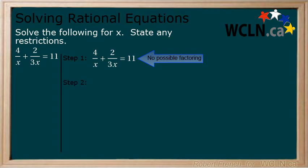Step 2. Find the lowest common denominator. We have x and 3x, so our lowest common denominator is 3x.